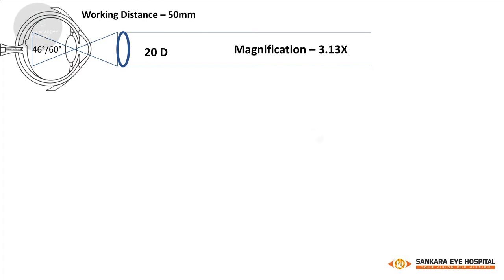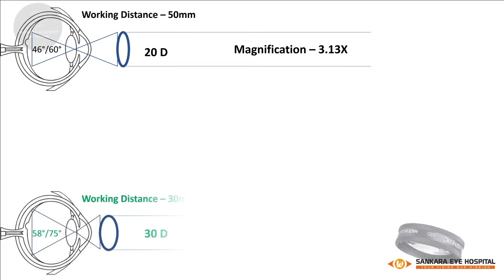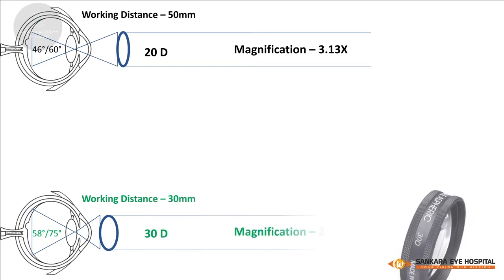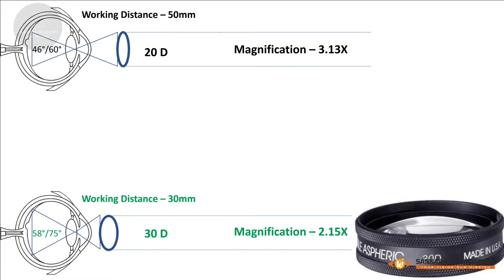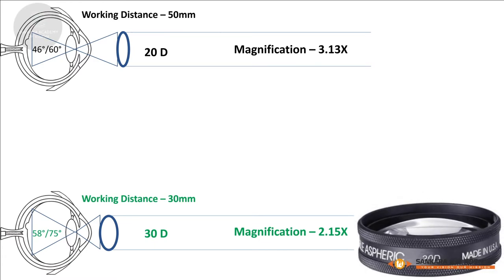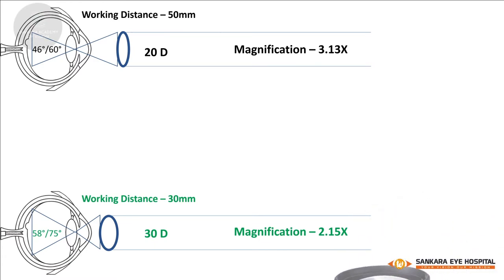Viewing pathology near the ora serrata is easier with a 30-diopter lens. The 30-diopter lens sacrifices some magnification but offers a larger 75 degrees dynamic field of view. This lens is used in pediatric patients and in small pupils.